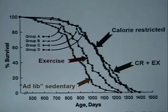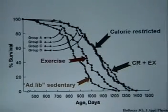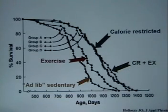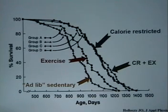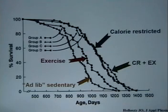The exercise animals were much leaner than the sedentary ad libitum fed animals, and they were even leaner than the CR animals. So basically, they had less body fat and more muscle mass than the CR animals. The male rats like to run on a wheel, and their body composition was completely different from the controls and from the CR after a few weeks of intervention.